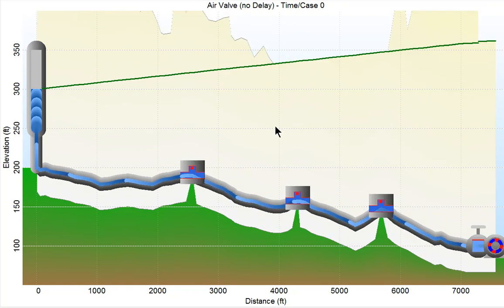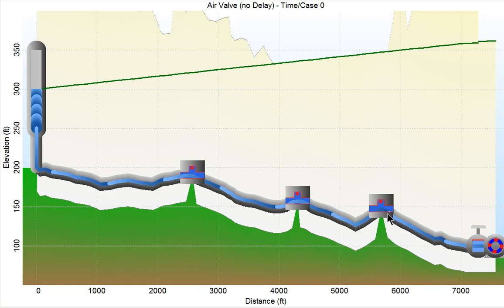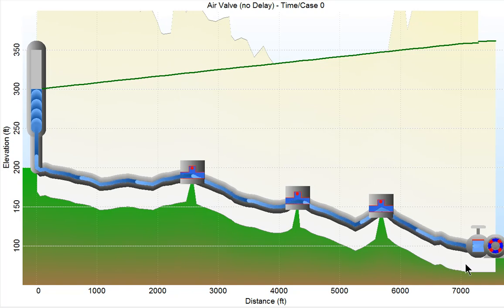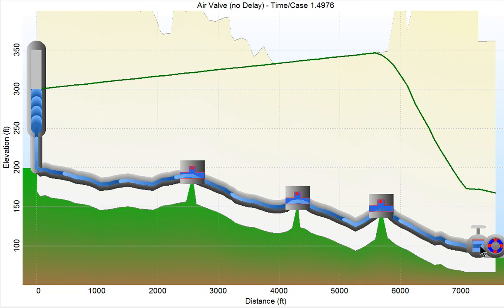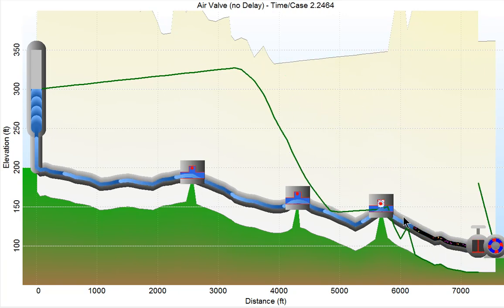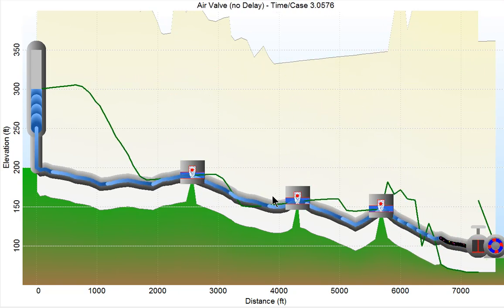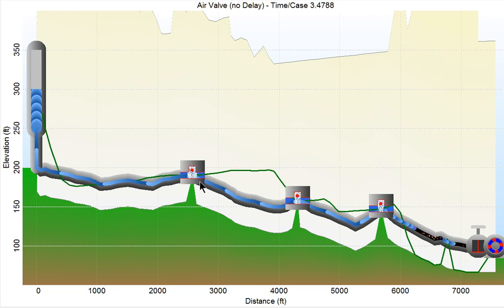Now we're going to repeat the simulation for a system with some air valves. We have three air valves positioned here at high points in the system. We're going to run the same surge analysis. The pump slows down, the check valve closes, and as you go down the line, you'll see that there's no cavitation beyond the air valves.